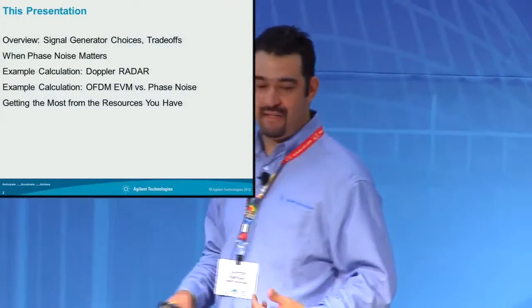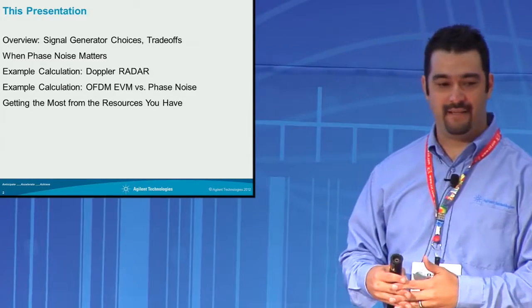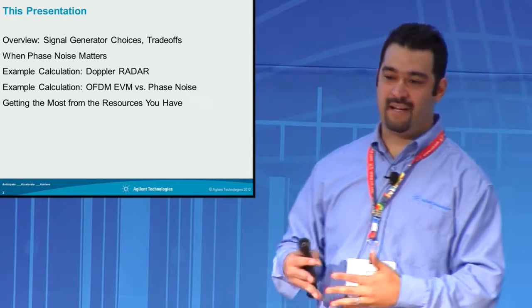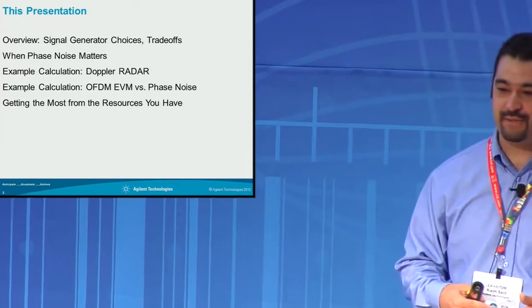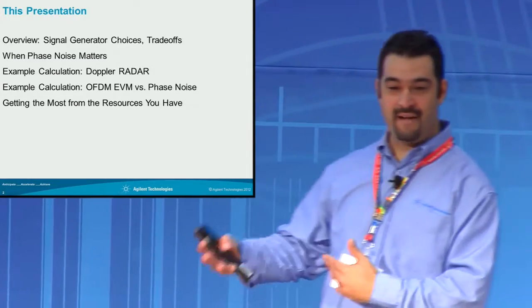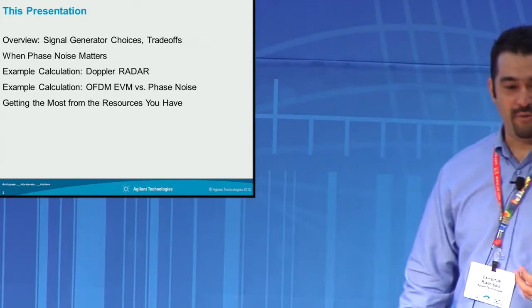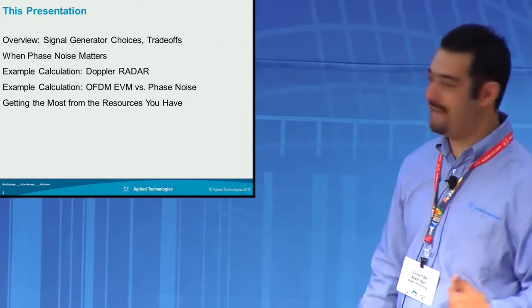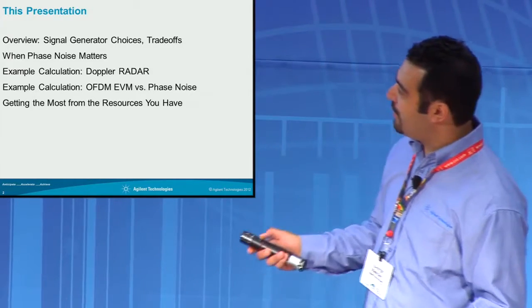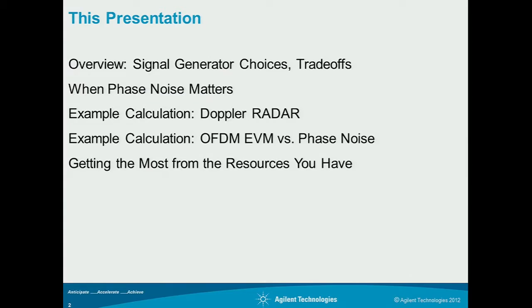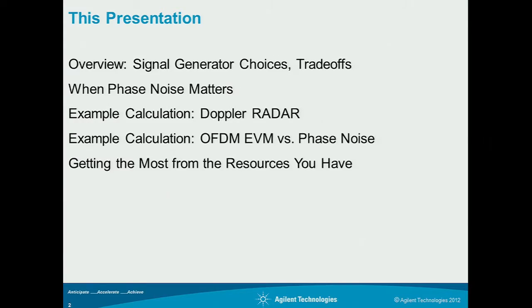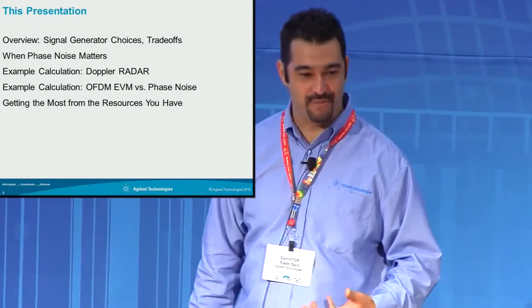One of the things we want to cover is how do you choose — phase noise is always a complex measurement that may or may not affect your tests. A lot of engineers I speak to don't always understand where it matters and where it doesn't. Hopefully today you'll have some tools to figure out on your own whether you need the best phase noise or something a little less. We're going to do a quick overview of signal generator choices and trade-offs, talk about when phase noise matters and when it doesn't, and do a couple of examples — one from a radar perspective and one from an OFDM modulation perspective.